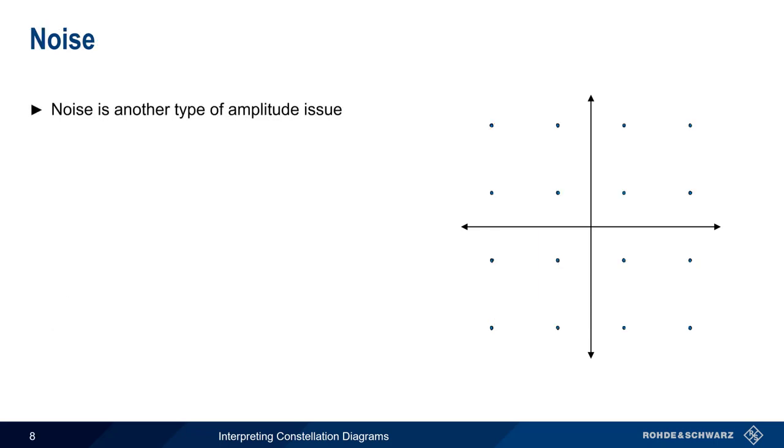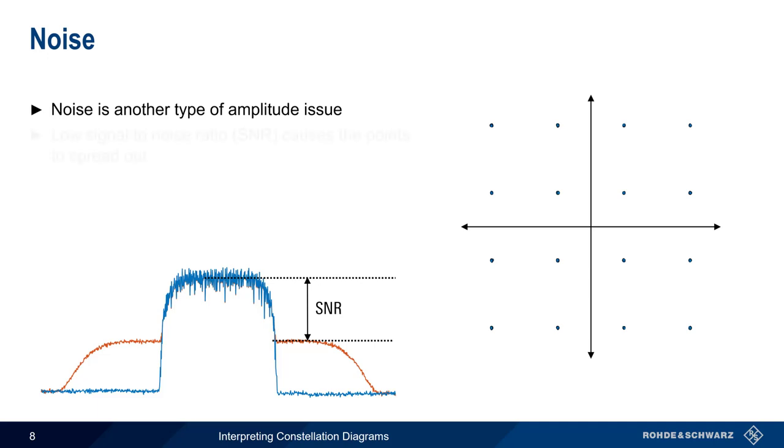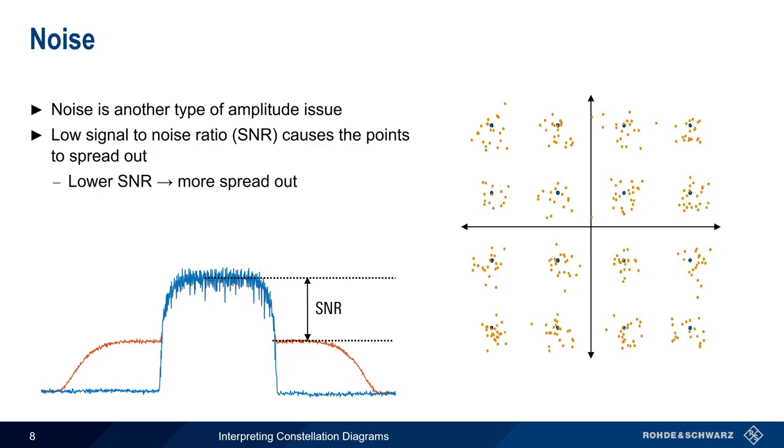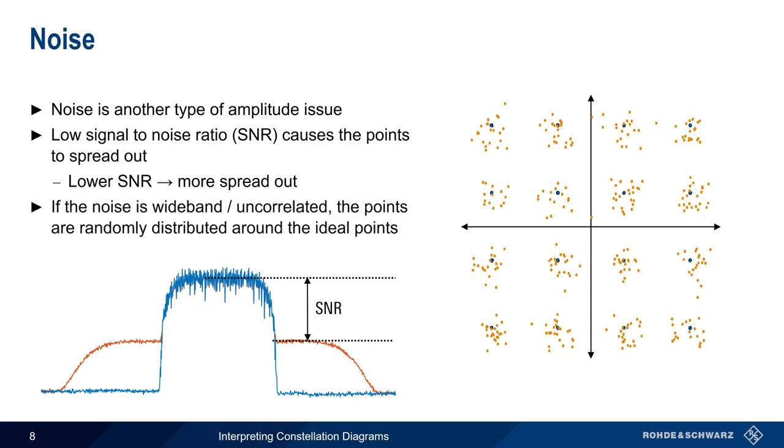Noise is another type of amplitude issue in digital transmission systems. When the signal-to-noise ratio, or SNR, is low, this will cause the points to spread out from the ideal or reference points. As the SNR decreases, the points become further and further spread apart. If the noise is wideband or uncorrelated, such as the noise shown here in red, the constellation points will be more or less randomly, or uniformly distributed, around the ideal points.